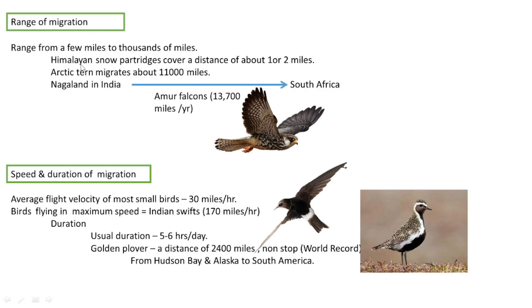The range of migration varies widely. Himalayan snow partridges cover only one or two miles, while the Arctic tern migrates about 11,000 miles. The Amur falcon covers around 13,700 miles per year — one of the farthest migrating birds. Average flight velocity for most small birds is 30 miles per hour, but the Indian swift flies at a maximum speed of 170 miles per hour.